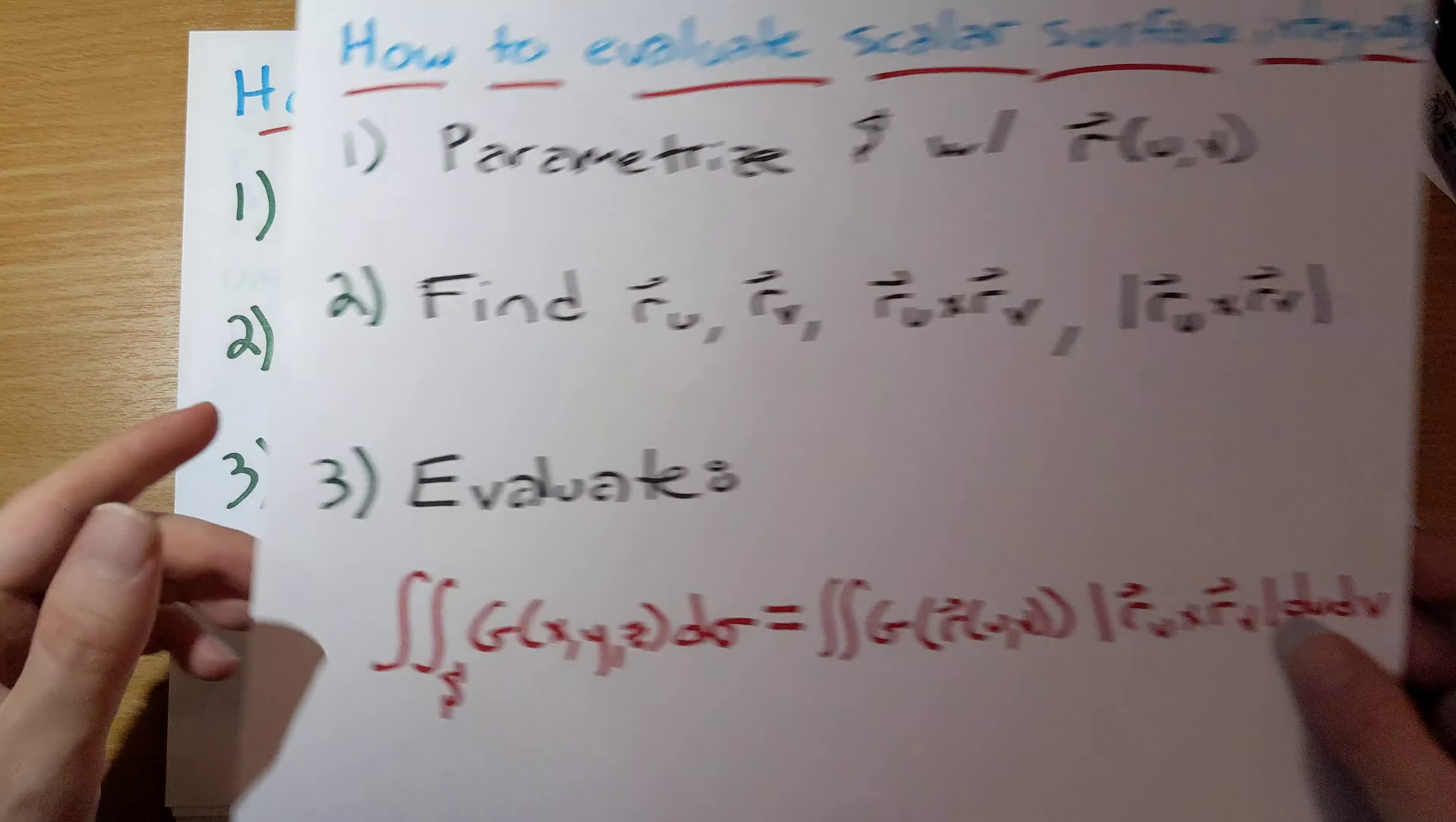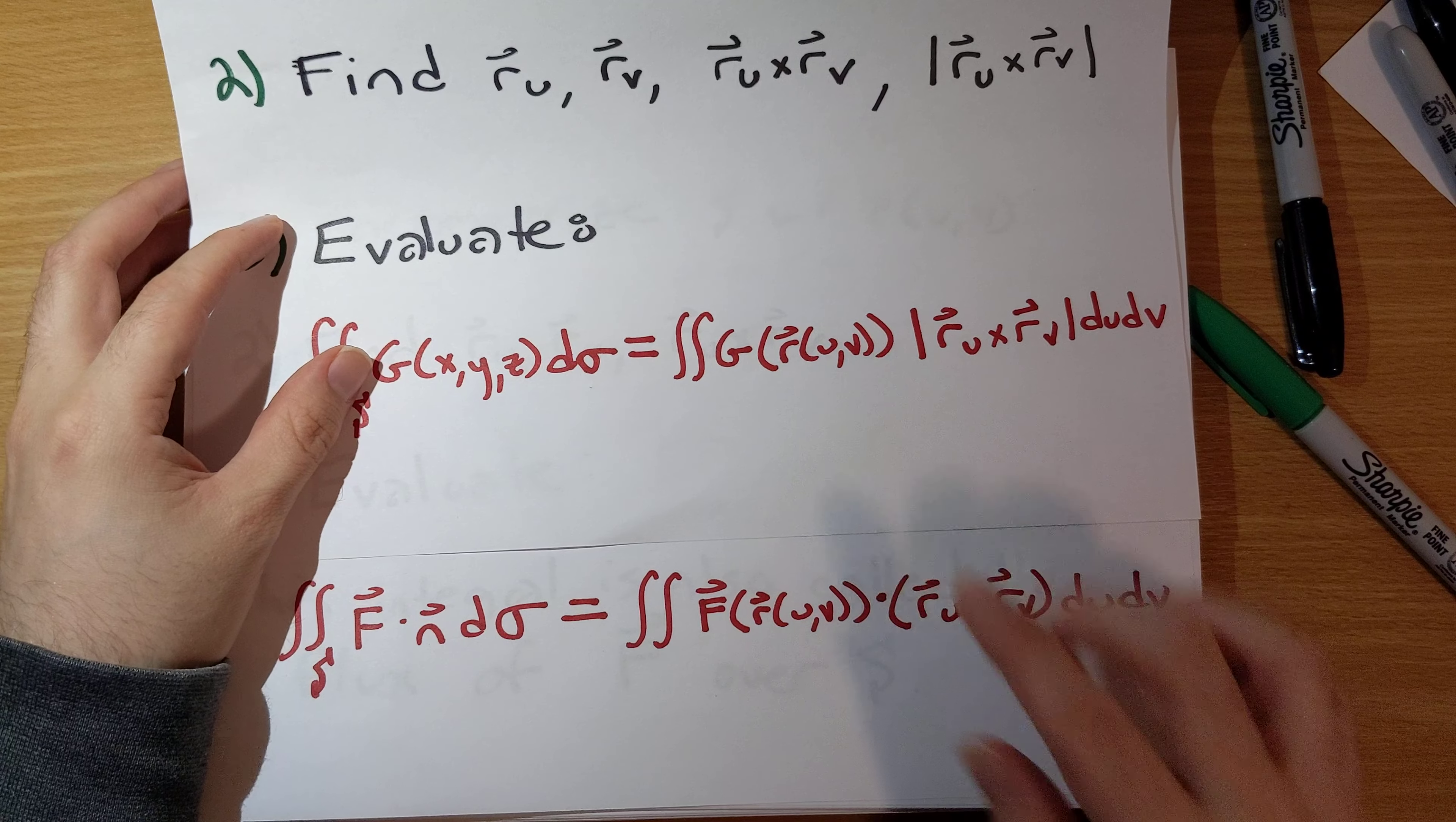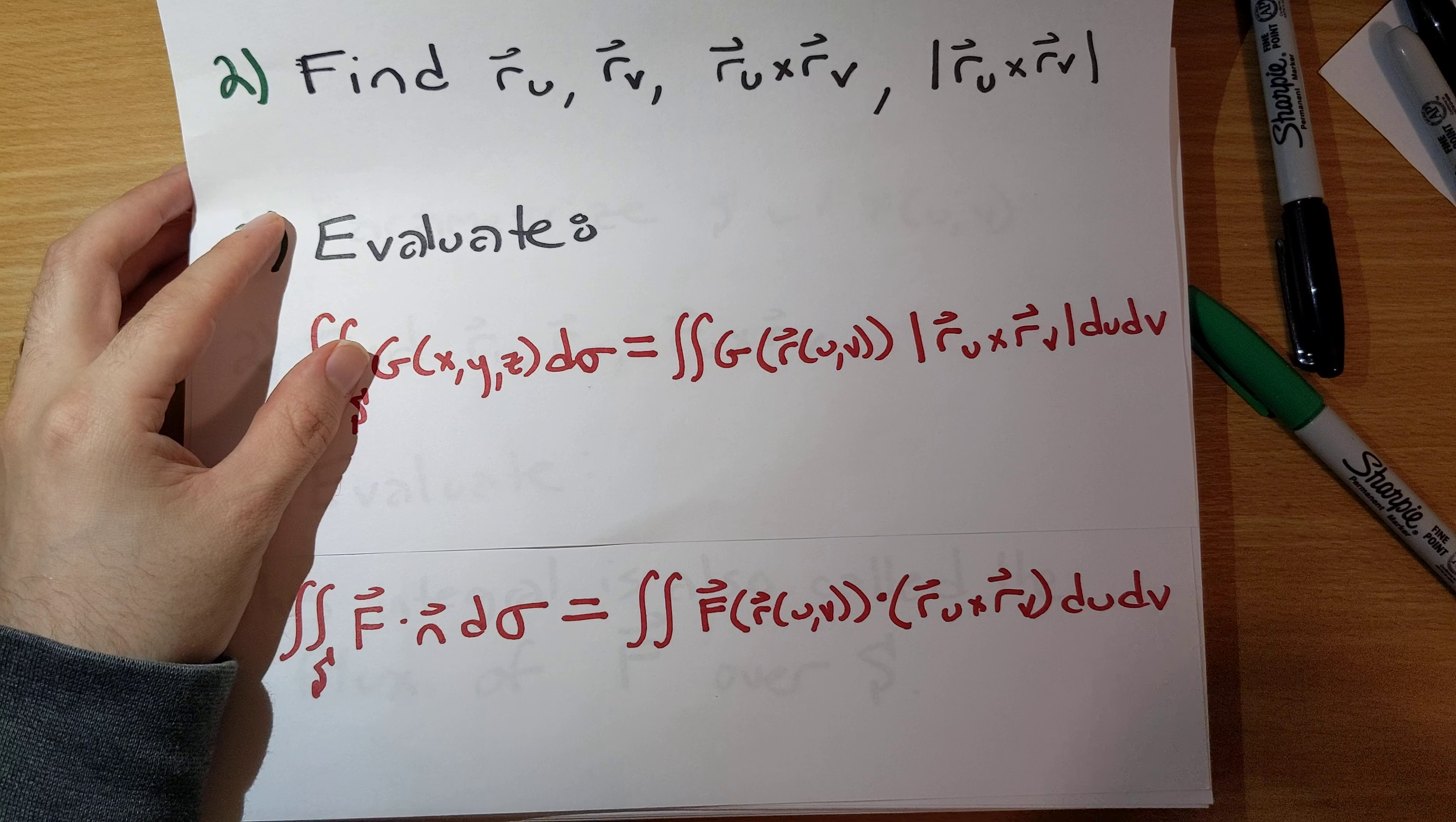Let me show just how similar this is to the scalar surface integral calculation. In both of them, we have to start by parametrizing the surface. Then we calculate r_u, r_v, and the cross product. In the scalar surface integral, we also need to calculate the magnitude of the cross product. Then for the evaluation step, you substitute in the parametrization into the function you're integrating and multiply by r_u cross r_v, where multiplying in the scalar surface integral means multiplying by the magnitude of this cross product—that's a scalar. Multiplying here means doing the dot product of this vector with this vector. This should feel extremely familiar.